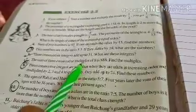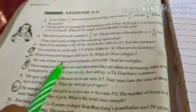Good morning students. Today we will discuss more questions of exercise 2.2. See question number 7. The sum of 3 consecutive multiples of 8 is 888. Find the multiples.